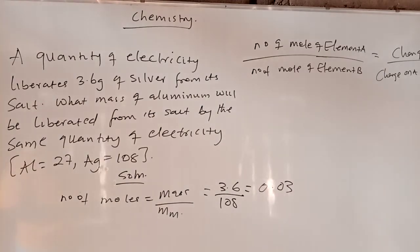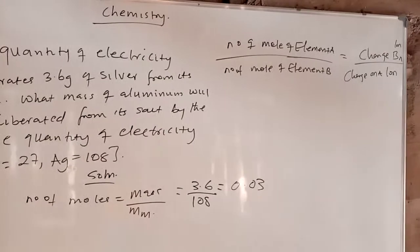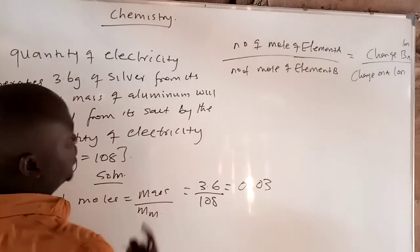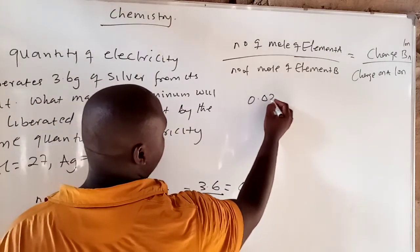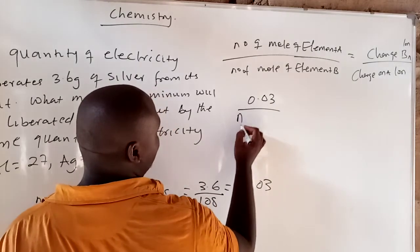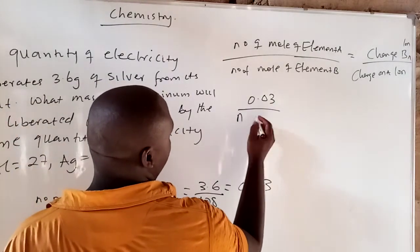Now that we have 0.03 moles, we apply it into the formula. Number of moles of element A over number of moles of element B. Let element A be silver, so the number of moles of silver is 0.03. Over the number of moles of element B — aluminium — which we don't know, so I write it as N of aluminium.